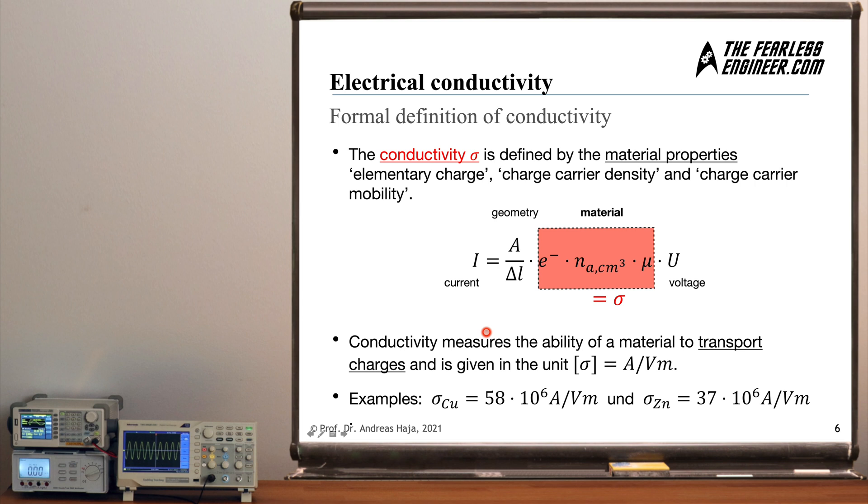And conductivity measures the ability of a material to transport a certain number of charges, free charges, through a conductor under the influence of an applied voltage. And it's given in this unit here, amps per volt meter. And in order to understand where this unit comes from, you only need to look at the units behind these three parameters here. And then you will arrive at this definition here.